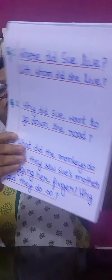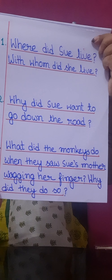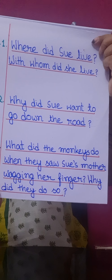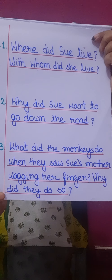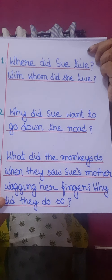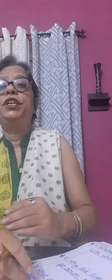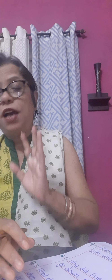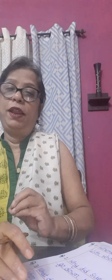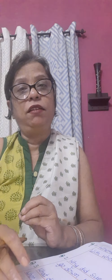Number two: why did Sue want to go down the road? Sue had no one to play with, so she wanted to go down the road to play with the little boy who lived there.